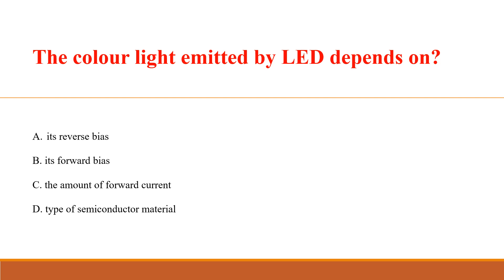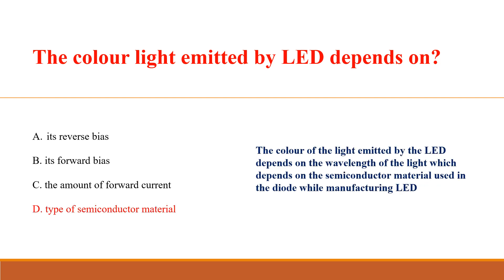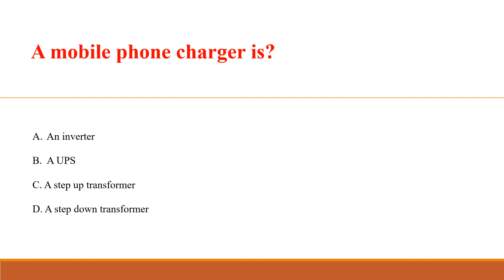The color of light emitted by an LED depends on: Answer D: The type of semiconductor material. The color of light emitted by the LED depends on the wavelength of the light, which depends on the semiconductor material used in the diode while manufacturing the LED.